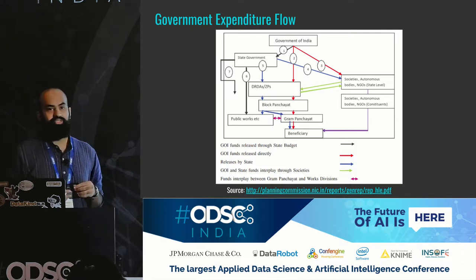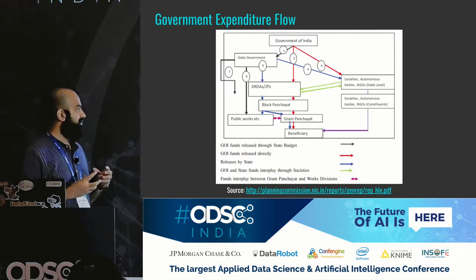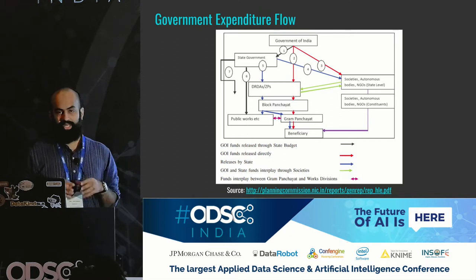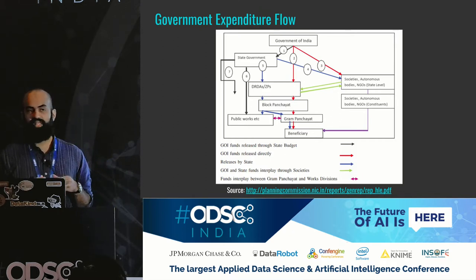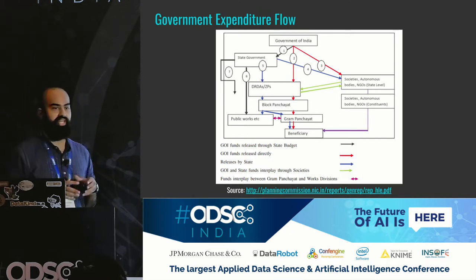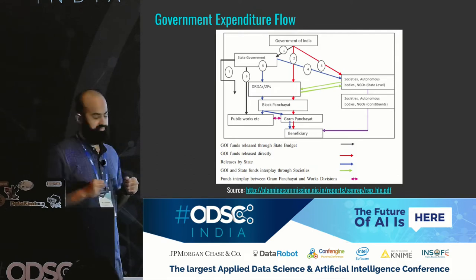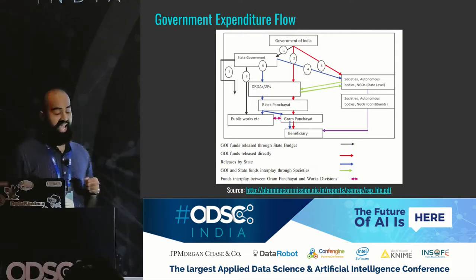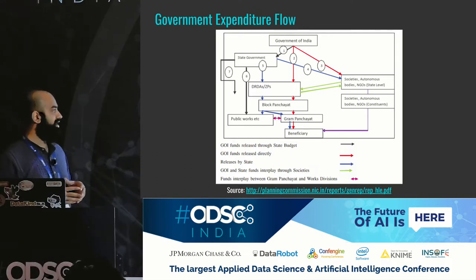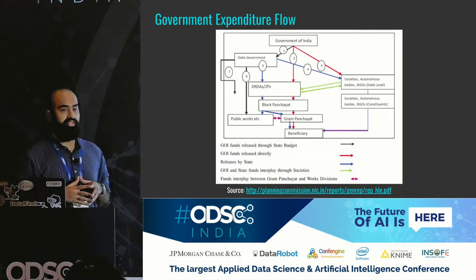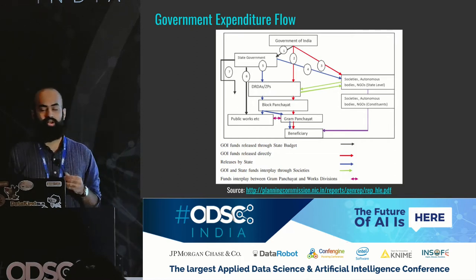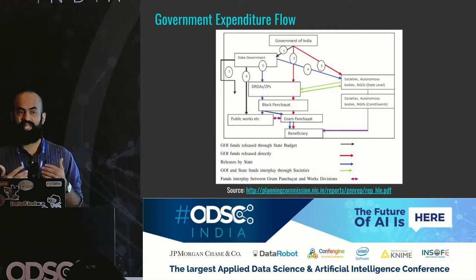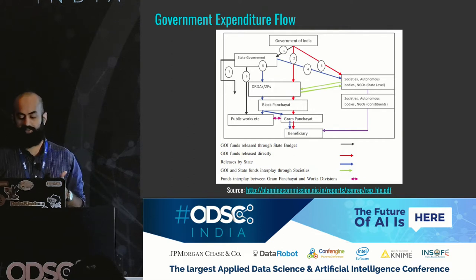From these two sources, money goes to district officers or zilla panchayats, from where it further trickles down to block panchayats for public works, or to gram panchayats, and then to the beneficiary. Societies can also give direct money to beneficiaries, and sometimes the state government can directly invest in public works like state highways. It's pretty complex, and even looking into one particular tier of government doesn't give us the complete picture. Societies and autonomous bodies don't publish data openly on a regular basis.